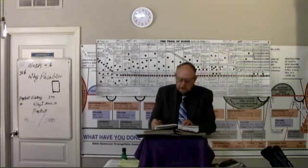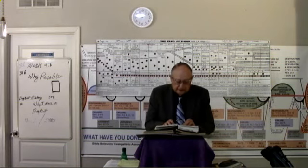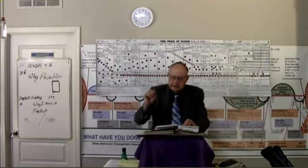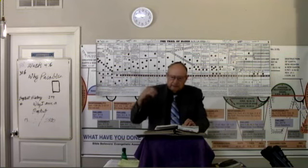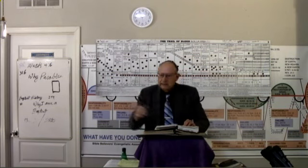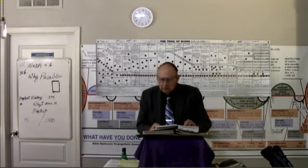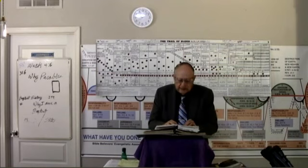The sower went out to sow. And it came about that as he was sowing, some seed fell beside the road. This is a first-person type of person. Now, the seed is the word of God, but what happens to the seed is the soils that the seed falls into is individuals. The seed is the word of God, but the soil is individuals and how that they receive the word of God. And some fell beside the road, and the birds came and ate it up.